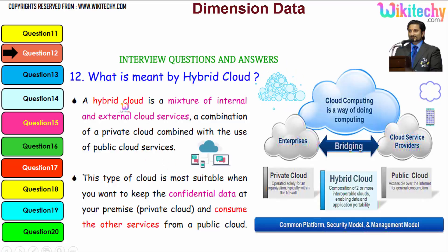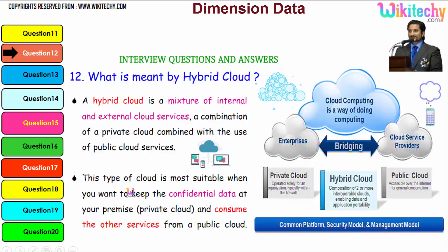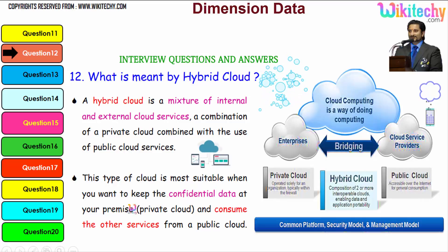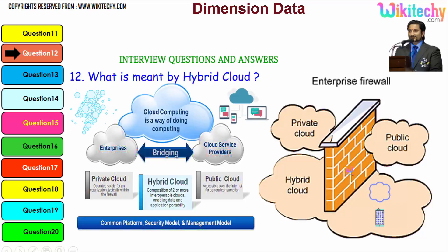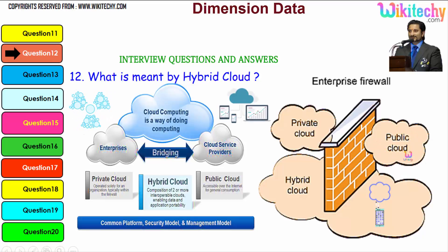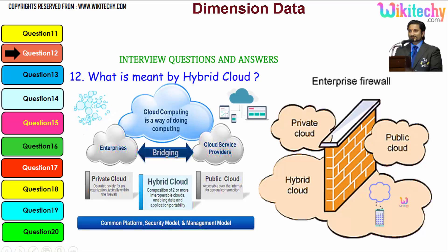By definition, a hybrid cloud is a mixture of internal and external cloud services — a combination of a private cloud combined with the use of public cloud services. This type of cloud is most suitable when you want to keep confidential data in your private environment and consume other services from a public cloud. Regarding firewall: private cloud is really secure with a specific firewall; public cloud doesn't have many specific firewalls; and hybrid cloud is partial — some data sits inside the firewall and the rest outside.